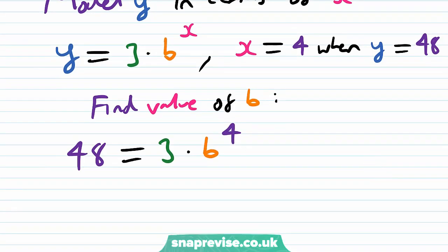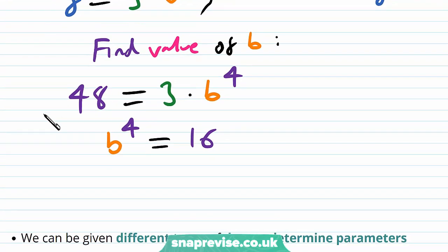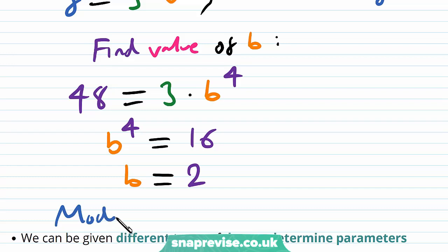By dividing we get that b to the power of 4 is equal to 16, from 48 divided by 3. Then if we assume that b is positive — because if b is negative the graph is highly discontinuous — we get that b is equal to 2. So our model is therefore y equals 3 multiplied by 2 to the power of x.